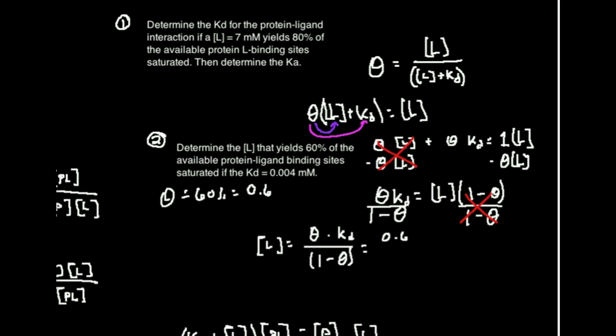So let's say if I move the decimal point over 1, 2, 3, that's going to be 4 micromolar. So now I'm going to have 0.6 times 4 micromolar, and I'm going to divide all this by 1 minus theta, which is 0.6.